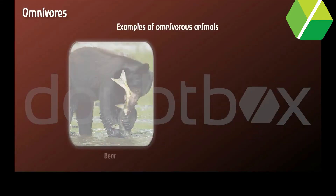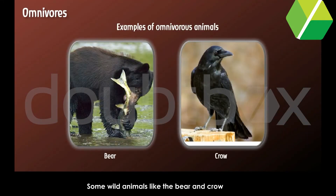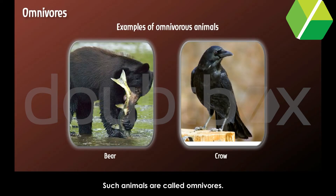Omnivores. Some wild animals like the bear and crow eat both plants and animals. Such animals are called omnivores.